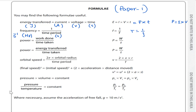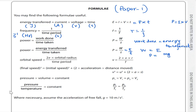Work can equal energy transport. W equals E. Sometimes we can write power equals to energy divided by time. Power equals to mgh, gravitational potential energy divided by time, or sometimes we can write kinetic energy divided by time.